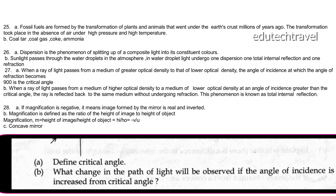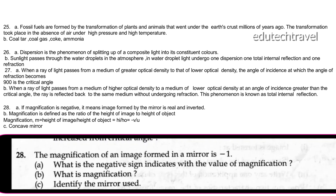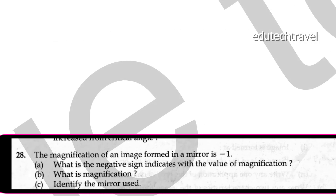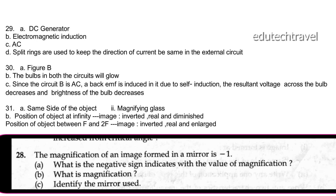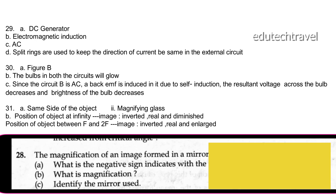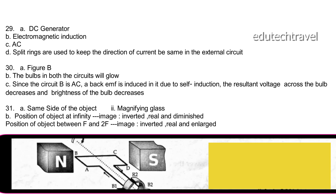Define critical angle: when a ray of light passes from a medium of greater optical density to one of lower optical density, the angle of incidence at which the angle of refraction becomes 90° is the critical angle. When light passes from a denser medium at an angle greater than the critical angle, it is reflected back into the same medium — this is total internal reflection.